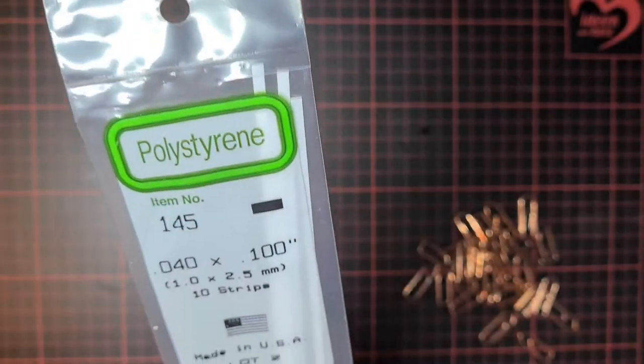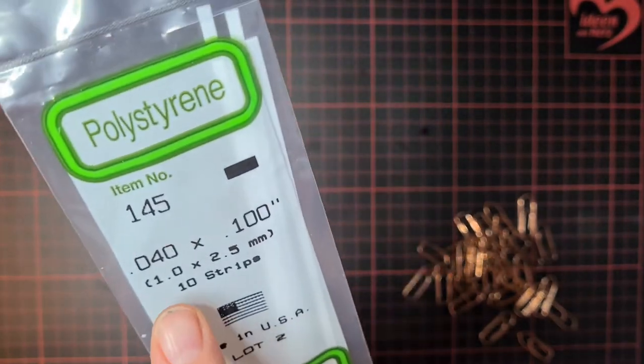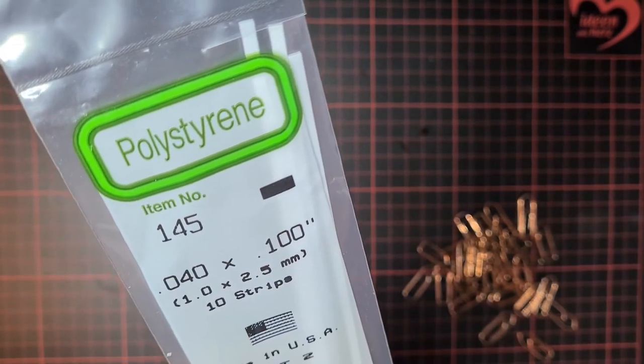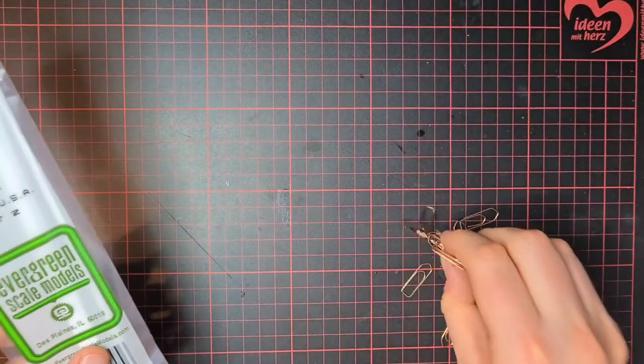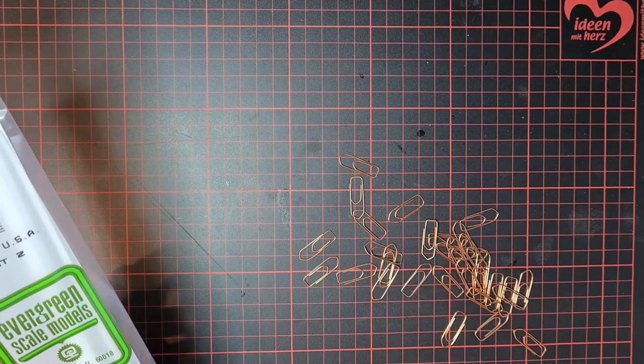Now to the park benches. All you need are these Evergreen 145 one times 2.5 millimeter polystyrene sheets, some paper clips, and of course your superglue.